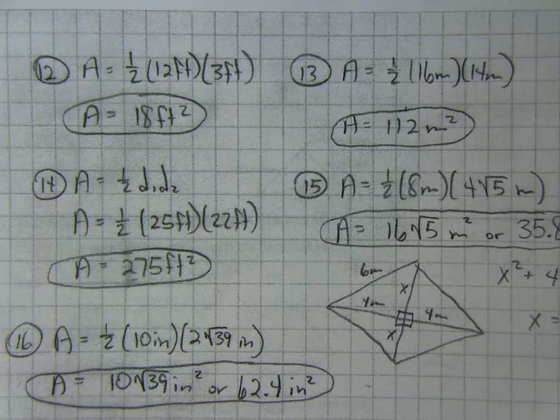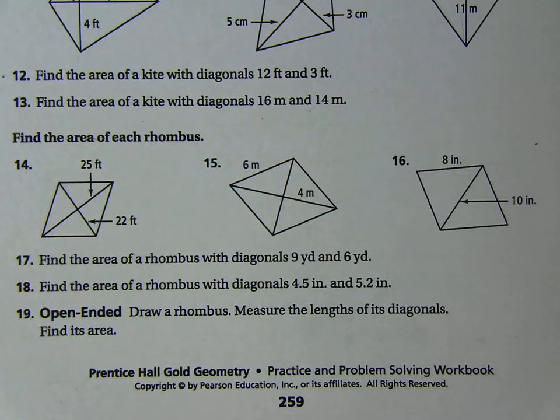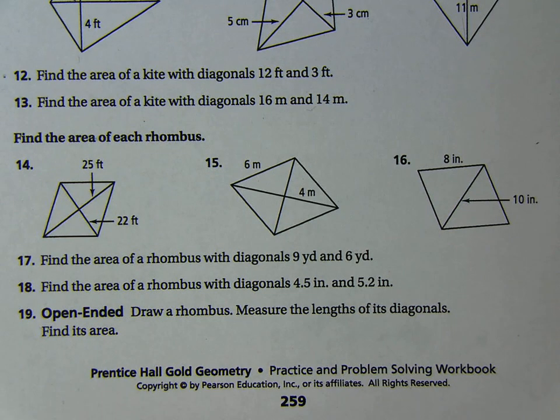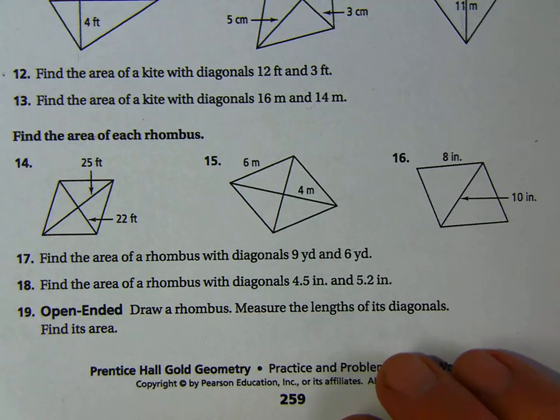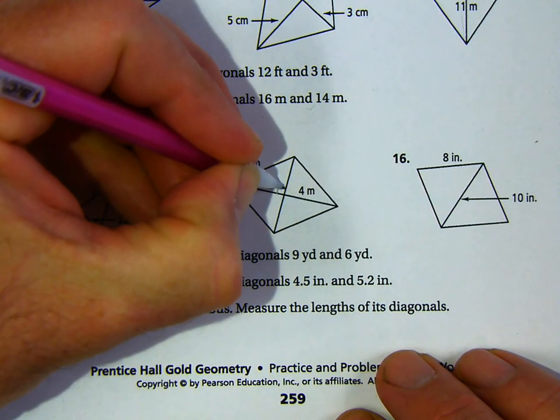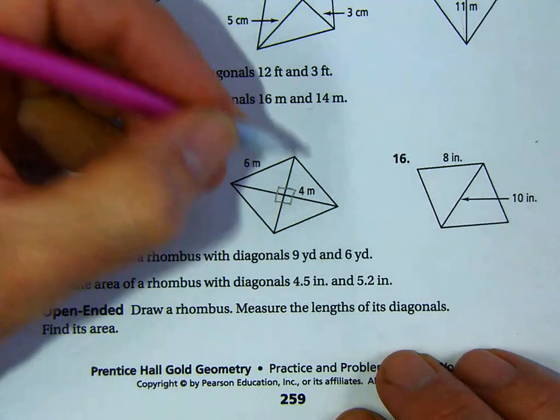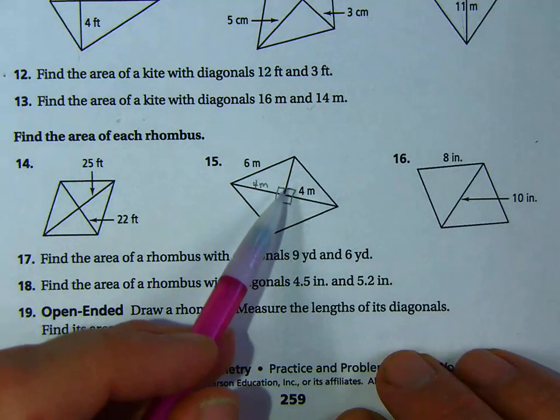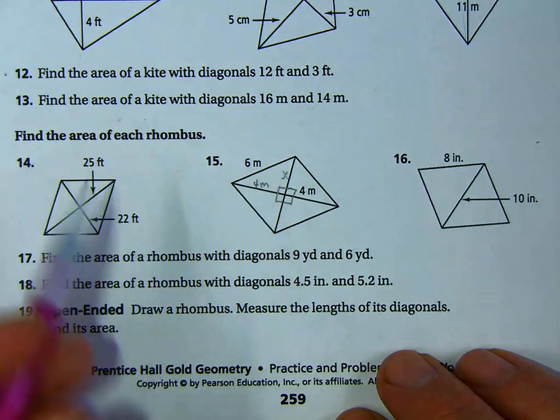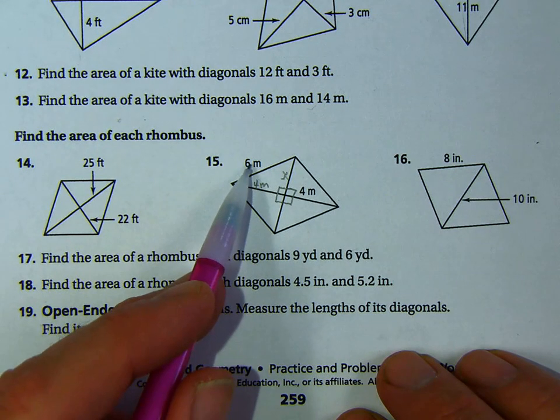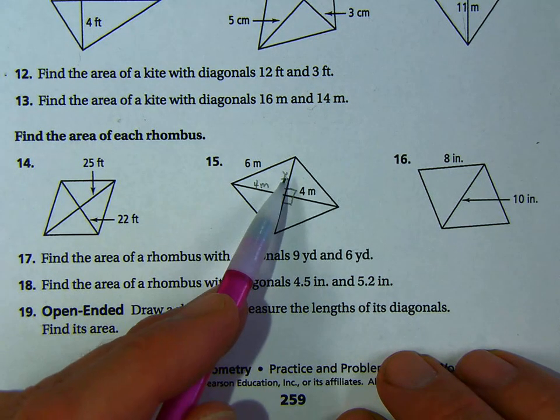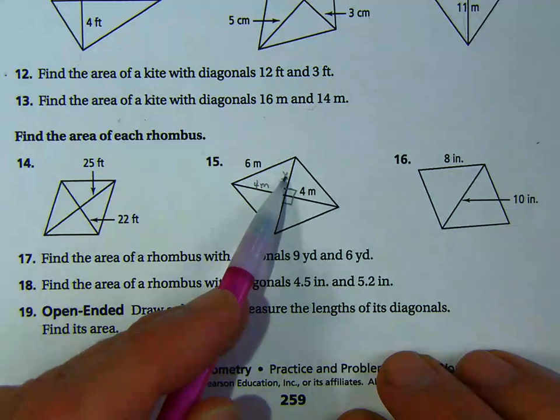And then number 14. Number 14, they're giving us a rhombus instead of a kite. The formula is the same. The area of a rhombus is one-half of D1 times D2. It's treated just like if it was a kite. So the area is one-half of 25 feet squared and 22 feet squared, which is 275 feet squared. This one, number 15, because we know the diagonals of a rhombus are perpendicular, we know that these are right triangles. Well, if that's 4 meters, this is 4 meters. So we have to find the other diagonals. So I need to find this measure. And I can use the Pythagorean theorem, x squared plus 4 squared equals 6 squared, to get this segment, double it, and I have that diagonal. So this diagonal is 8, and this is going to be x times 2. So let's look at how I did that one on number 15.